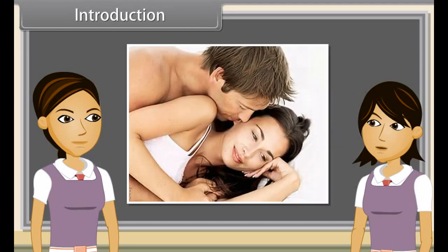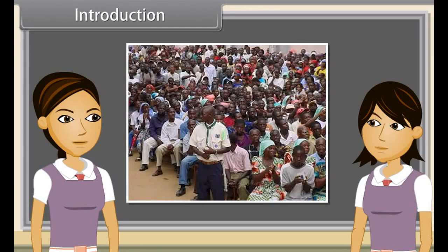For the process of reproduction, we have to make sexual contact. But if we do this without any protection, many diseases are spread from an infected partner. Due to rapid growth in population, we observe population explosion.